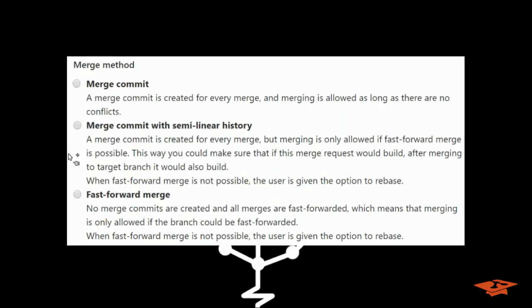So that's pretty much it, you guys. Short video today, just wanted to point out the three merge methods and how it affects the commit tree history. The default setting is just a typical merge commit.